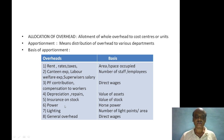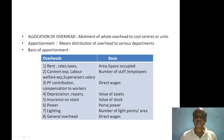Power expenses are apportioned on the basis of horsepower of machines — the horsepower of machines used in each department.